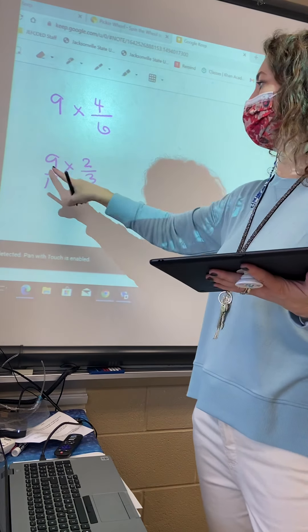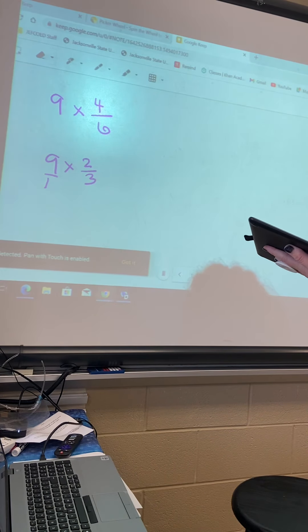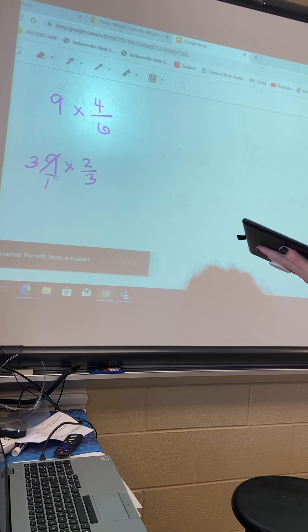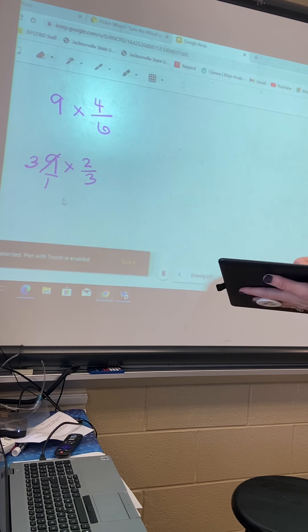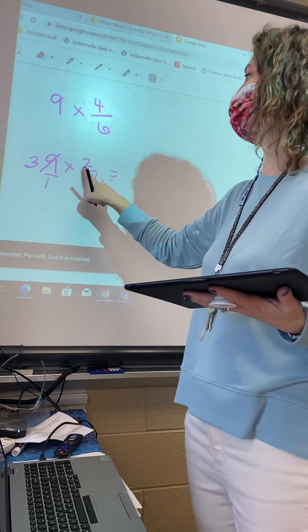9 and 3 are seesaw friends. What'll go into 9 and 3? 3. So slash it. Slash a 9. 9 goes into 3... 3 times. How many times will 3 go into 3? I said 9 goes into 3. I meant 3 goes into 9, 3 times. Okay? 3 goes into 3, 4 times... How many times? 1. 1. Okay. Alright. Now other seesaw friends are 1 and 2. Do they have anything in common? No.